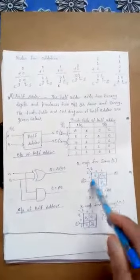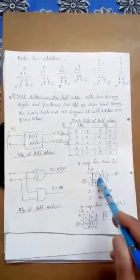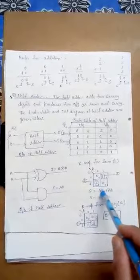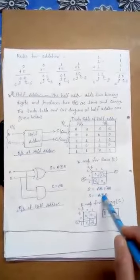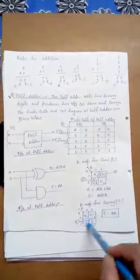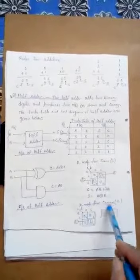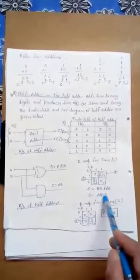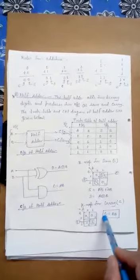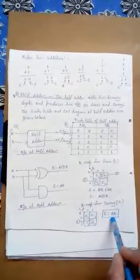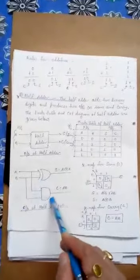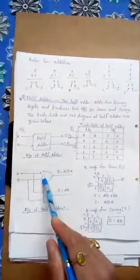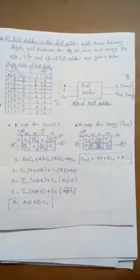This is the K-map for sum, and the output of this K-map will be S = A·B̄ + Ā·B, or S = A XOR B. This is the K-map for carry, and the output of this K-map will be C = A·B. For the circuit diagram, for sum we need an XOR gate whose inputs are A and B, and for carry we need an AND gate whose inputs are A and B. This is the circuit diagram of half adder — this is an XOR gate and this is an AND gate.